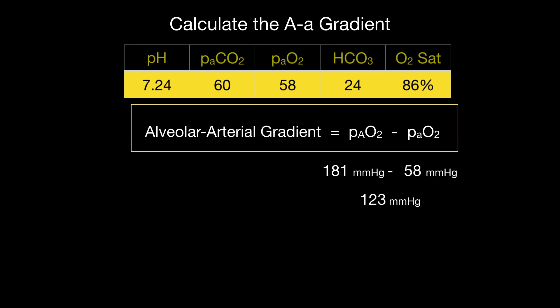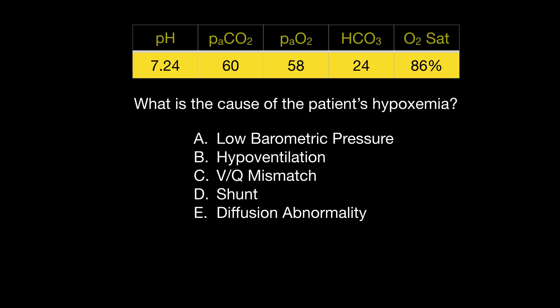This is a huge AA gradient. Any AA gradient greater than 20 should raise a red flag — there's something amiss. Since we know there's an AA gradient, we can take off low barometric pressure and hypoventilation as the primary causes of hypoxemia. But it could still be VQ mismatch, shunt, or diffusion abnormality.